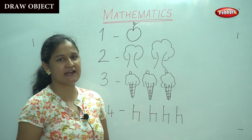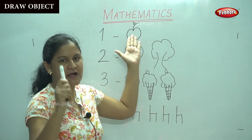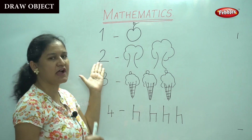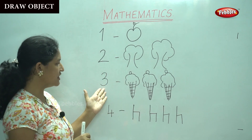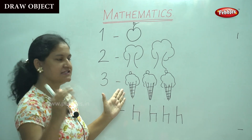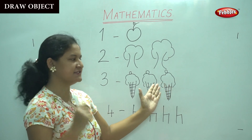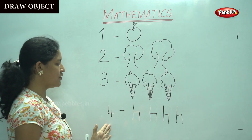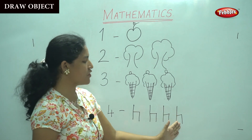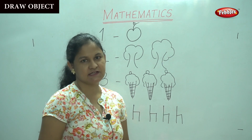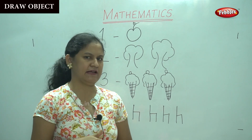Shall we see again and count? For number 1, I have drawn 1 apple. For number 2, I have drawn 2 trees. For number 3, I have drawn 3 ice creams — 1, 2, 3. For number 4, I have drawn 1, 2, 3, 4 — 4 chairs. You could draw any objects that you like.